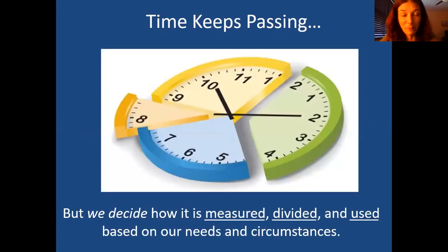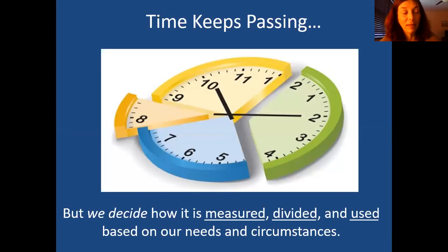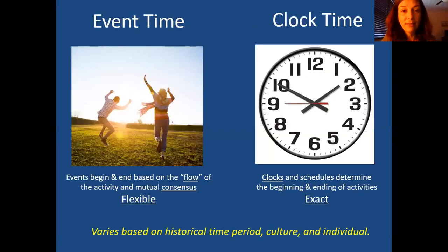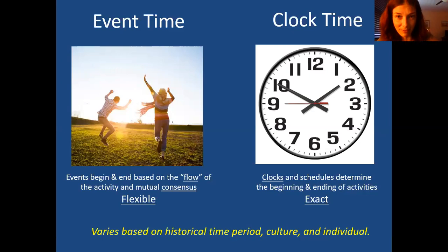One of the main concepts I talk about is that time keeps passing — no matter what we do, we can't stop it. But we decide how we measure it, divide it, and use it based on our needs and circumstances. We might have a natural way to do this, but if it's not working for us, we could actually change that and shift the way we relate to time. So they divide things roughly into what they call event time and clock time.